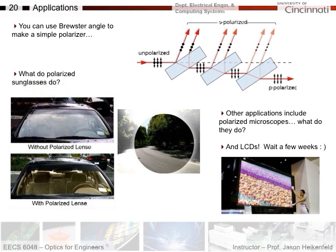The second reason the Brewster angle is important is polarized sunglasses. Polarized sunglasses reduce glare off surfaces. This image shows a road with glare reduced in the background, and here's glare off a glass windshield — without polarized lenses and with polarized lenses. Essentially, if light hits a surface at the Brewster angle, it will be transmitted. If you make your glass with polarizers oriented to look at that polarization of light, all the light Fresnel reflected at the Brewster angle will be absorbed by the polarizer.